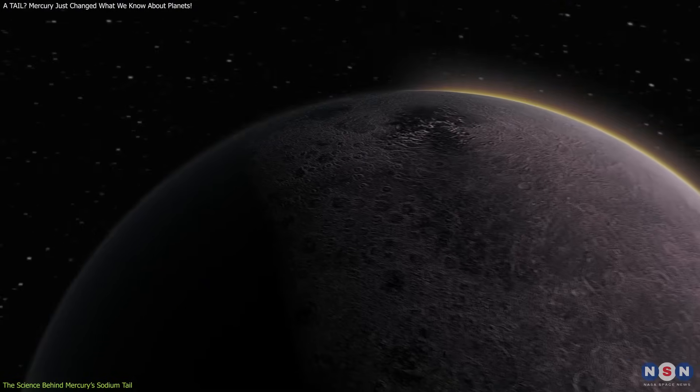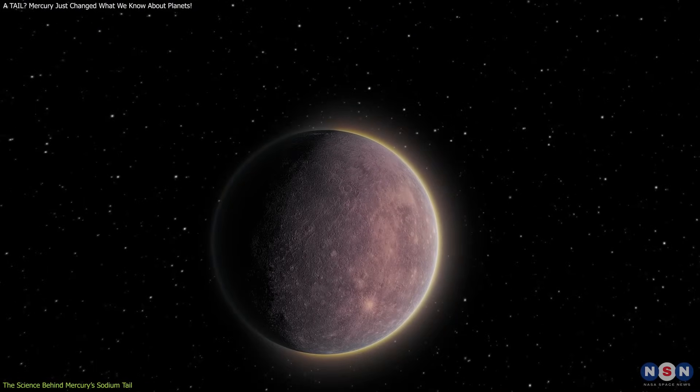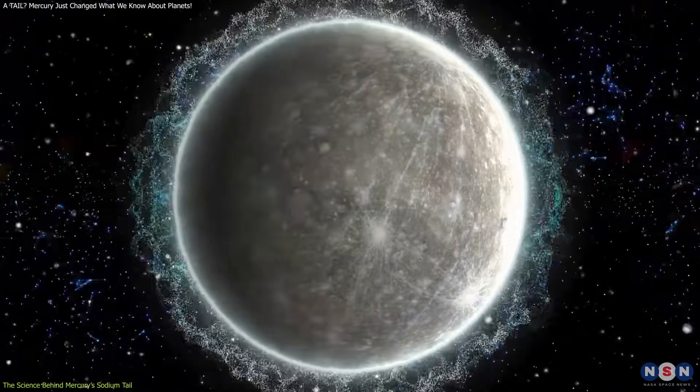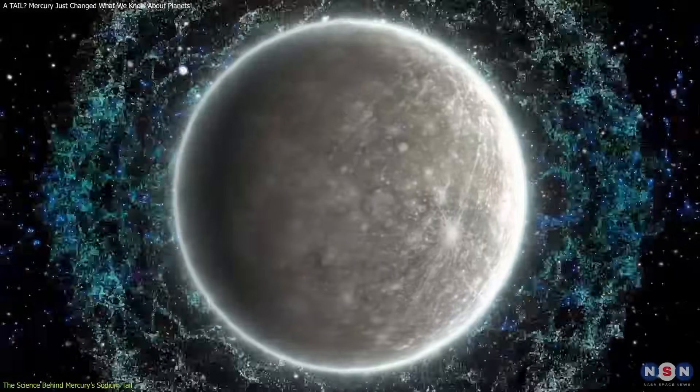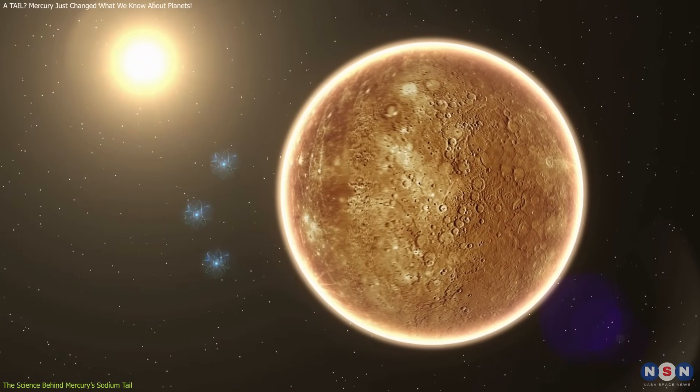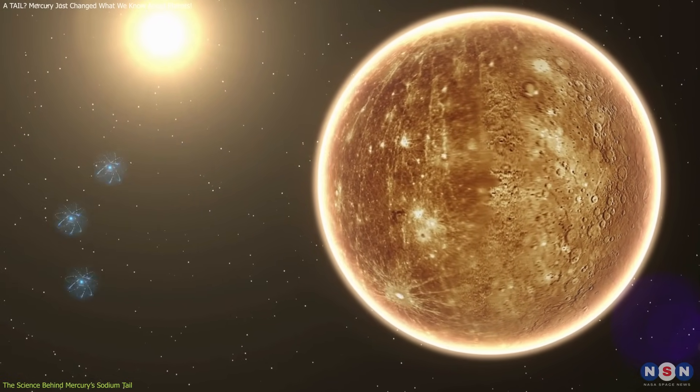Interestingly, Mercury doesn't have a traditional atmosphere. Instead, it has an exosphere, a super thin layer of atoms that escape the surface and don't interact with each other like in a normal atmosphere. This means any sodium atom ejected from Mercury has a good chance of simply flying off into space, never to return. Since Mercury lacks weather or wind, the tail is entirely shaped by external forces.